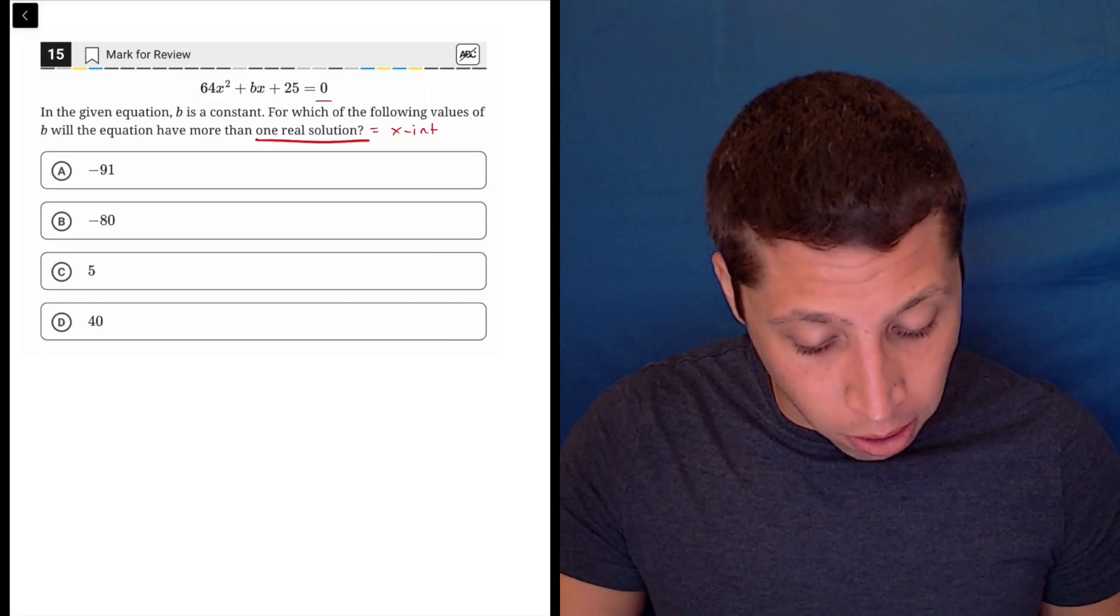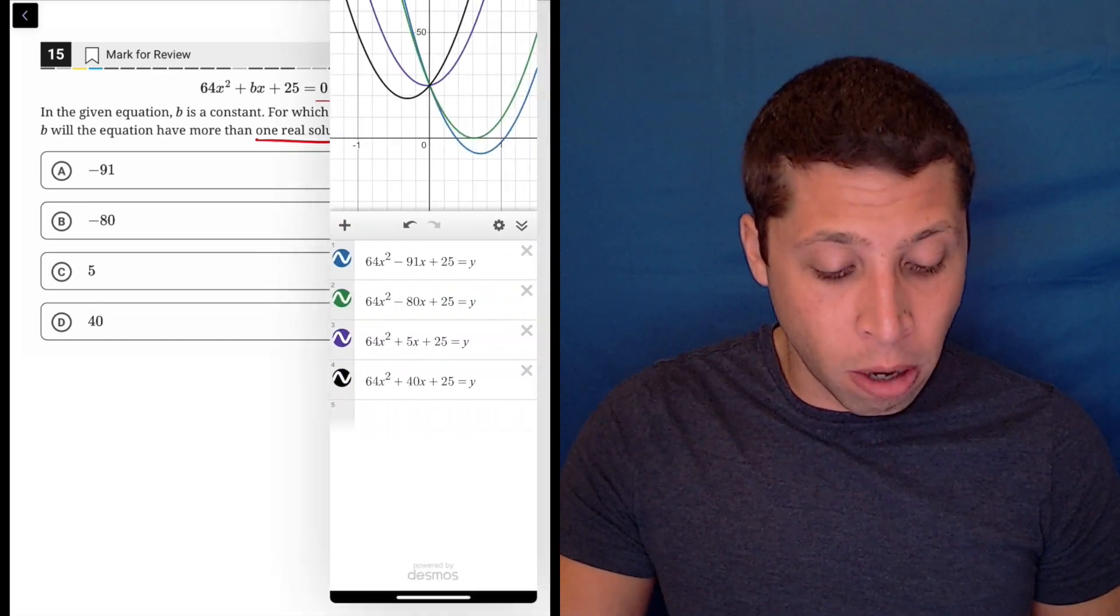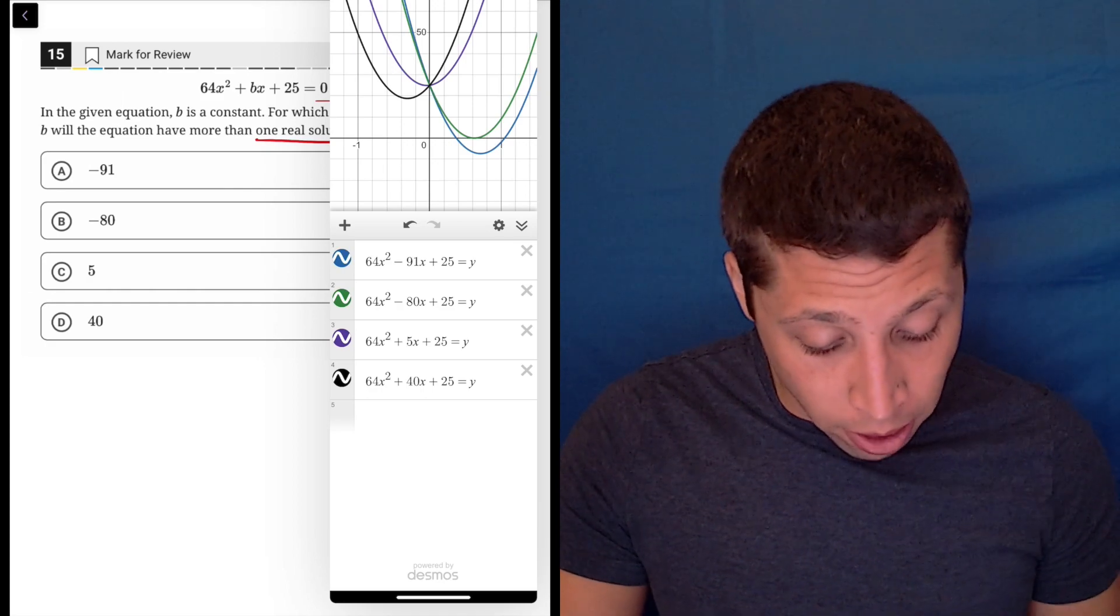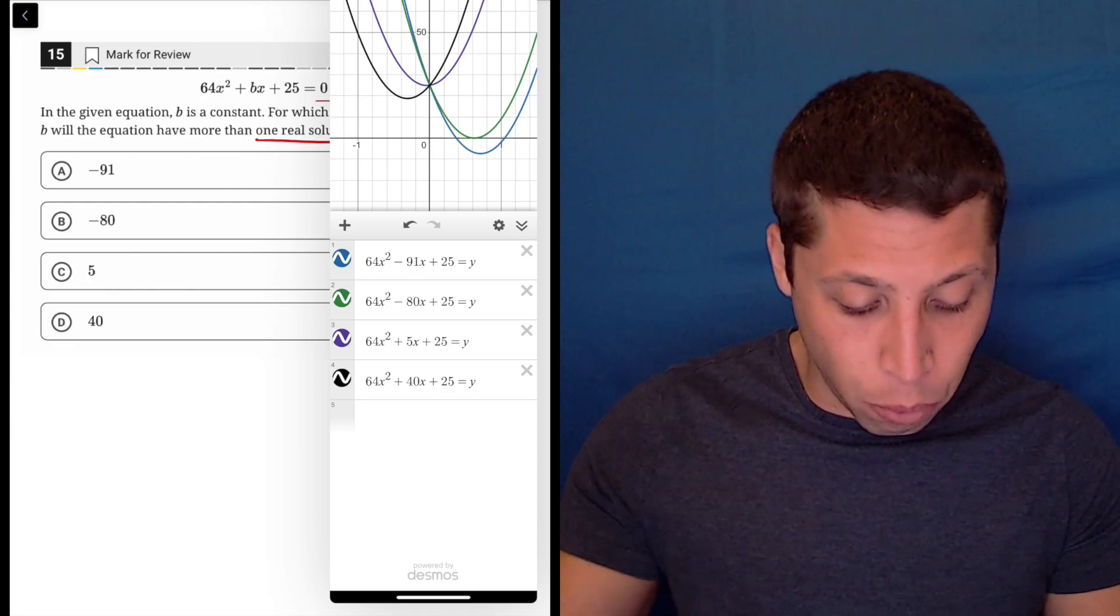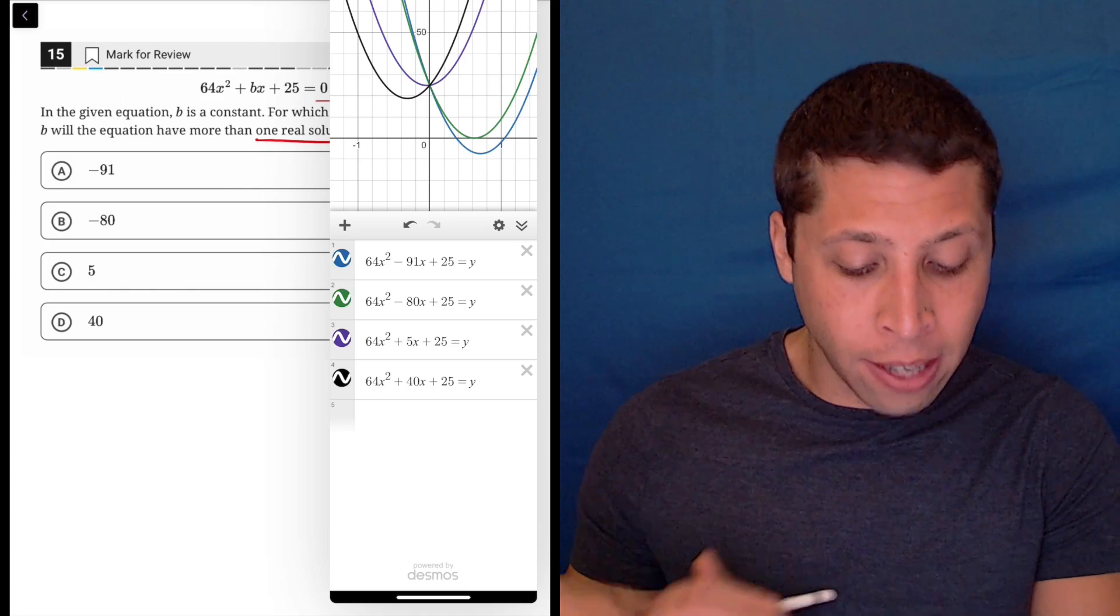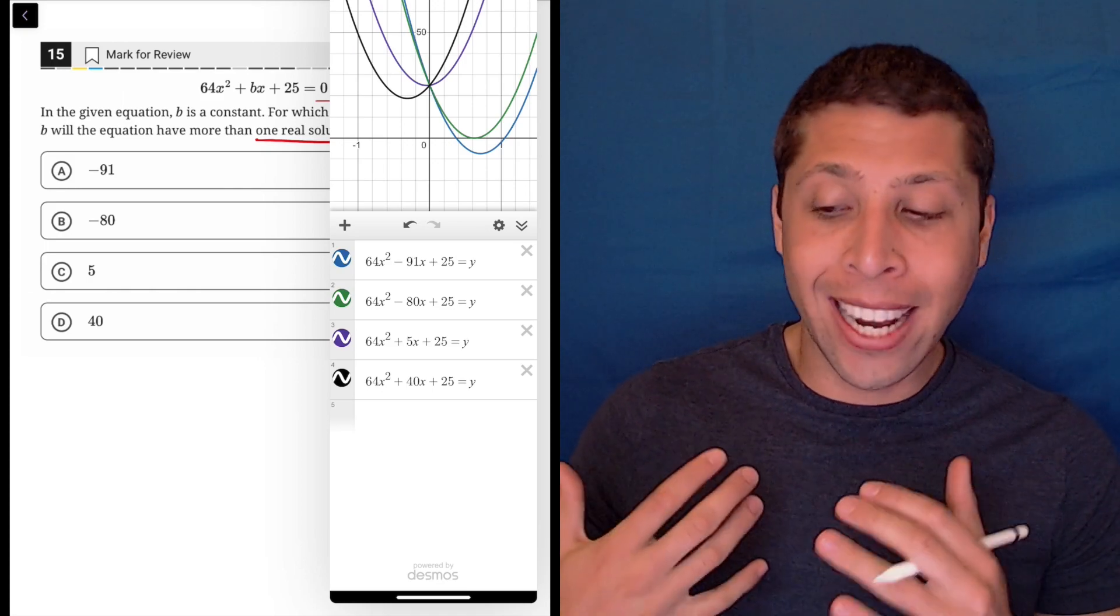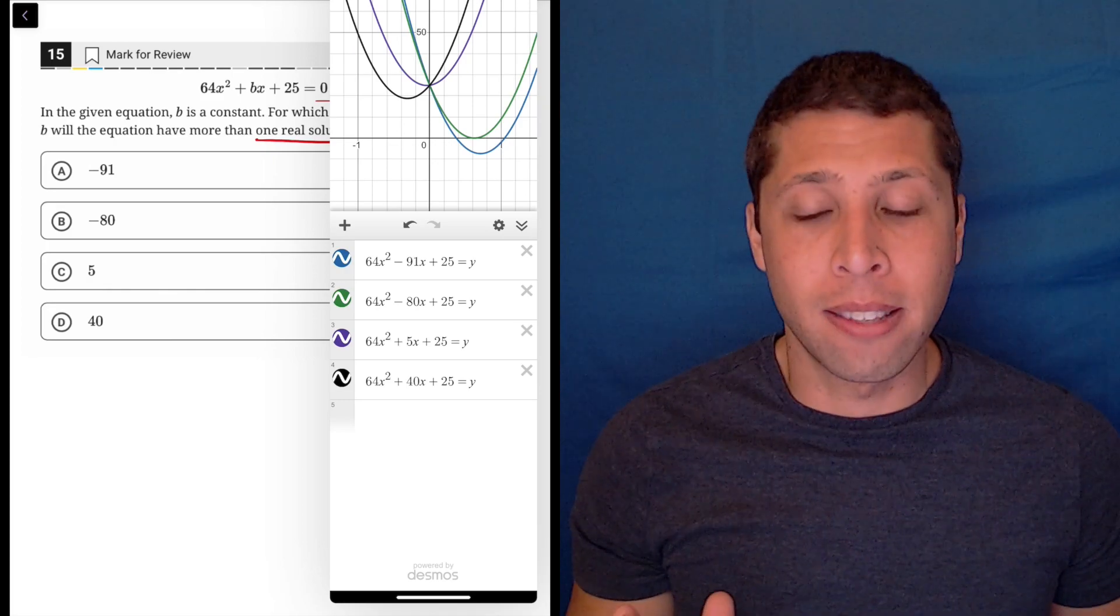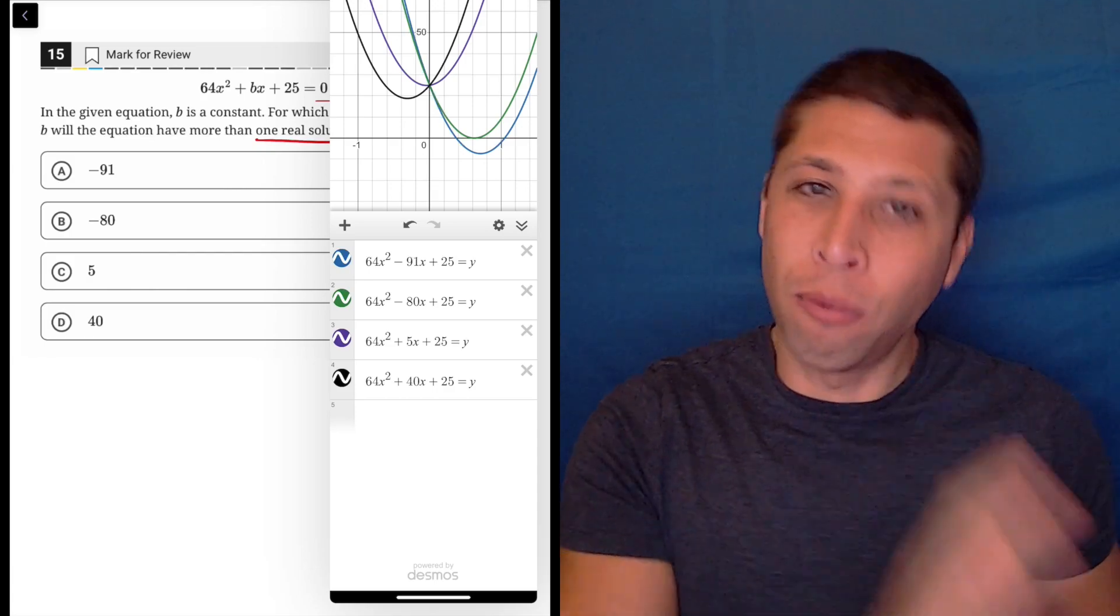I wouldn't have put them all on the thing at once, but here I did just to show you. Here are my four choices, right? Negative 91, we can see that that is in line A there. Negative 80, 5, 40, all of the rest of the equation is the same. And then I switched out the zero for a y. I did that because if I put it as a zero, I would just get straight vertical lines. I could still use that to figure out the answer, but I think it's more confusing.